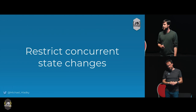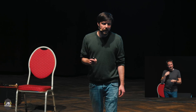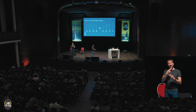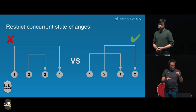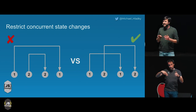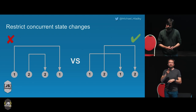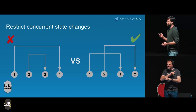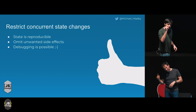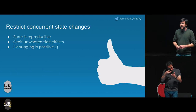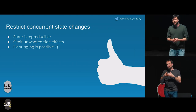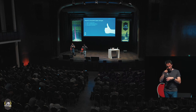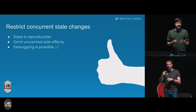Restrict concurrent state changes. This is a typical diagram for a race condition. You trigger two HTTP requests, one and two, and in one situation the second HTTP request arrives earlier than the first. This leads to broken UI state in your application. What you should take care of is that all your state changes are not concurrent. This is important — it's another puzzle to keep our state reproducible. You get rid of all those unwanted side effects. If you've ever run into a race condition with HTTP requests, you know you cannot debug it. Restrict concurrent state changes — this is the only way to be able to debug your application.